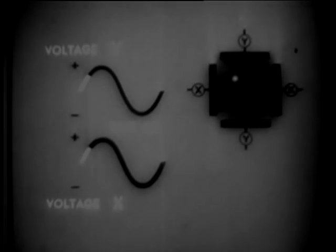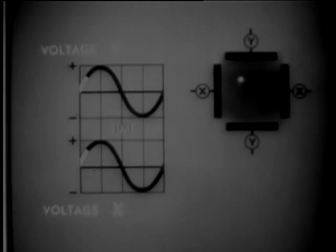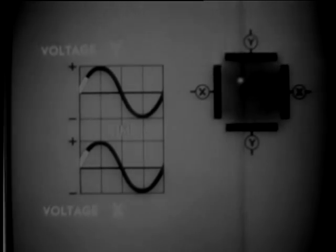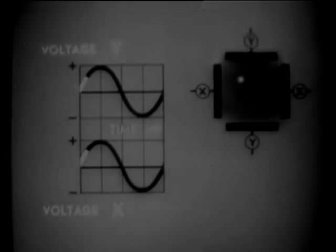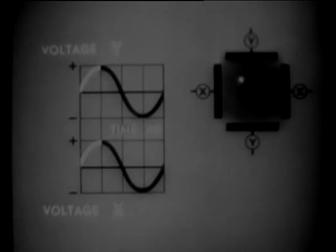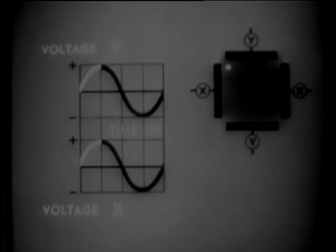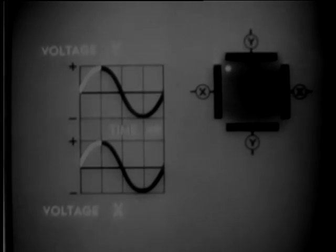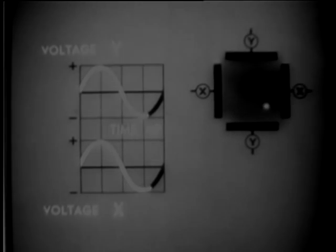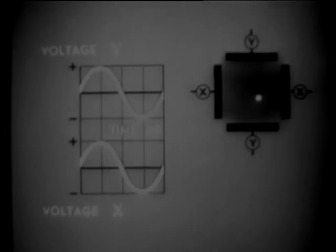Let's see what happens when voltages X and Y both reach their positive peaks together. The beam is deflected to its extreme diagonal position. That's because the vertical plates are deflecting it all the way up and the horizontal plates all the way to the side. As the two voltages complete their cycle of variation together, the beam follows a diagonal path upwards to the left and downwards to the right.